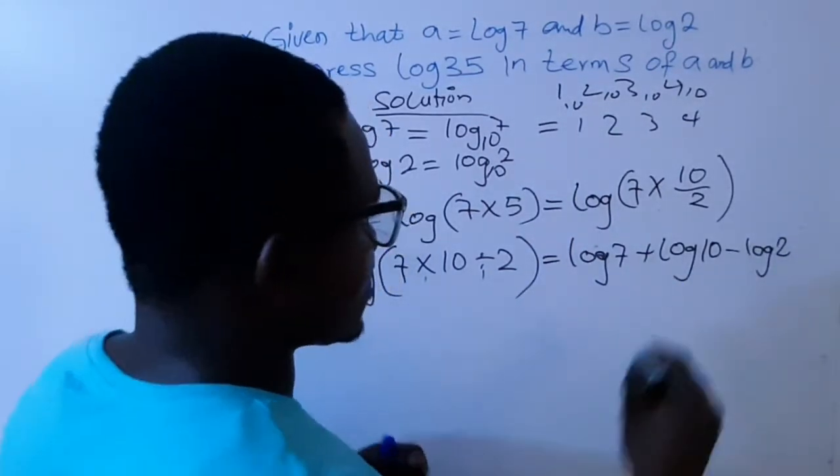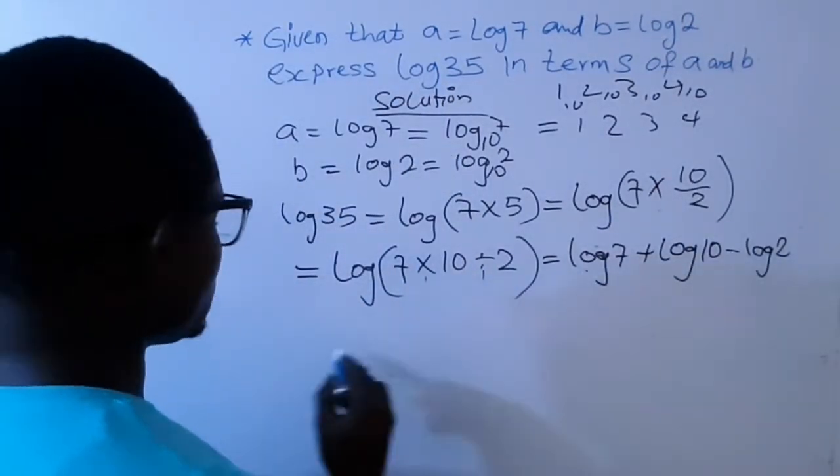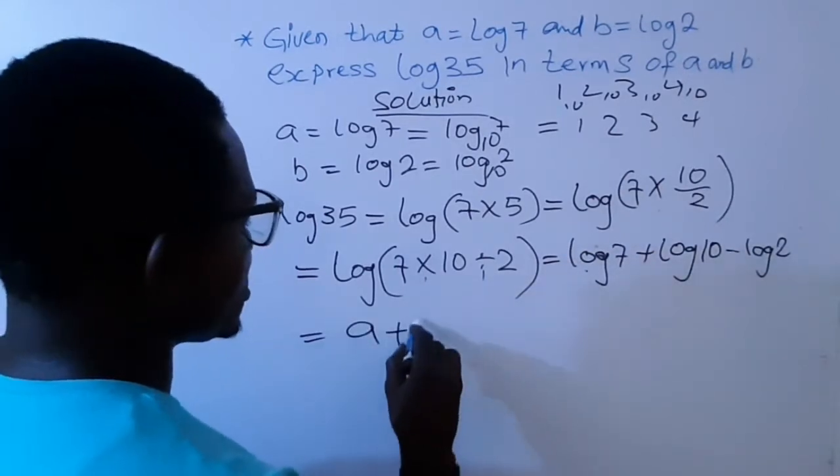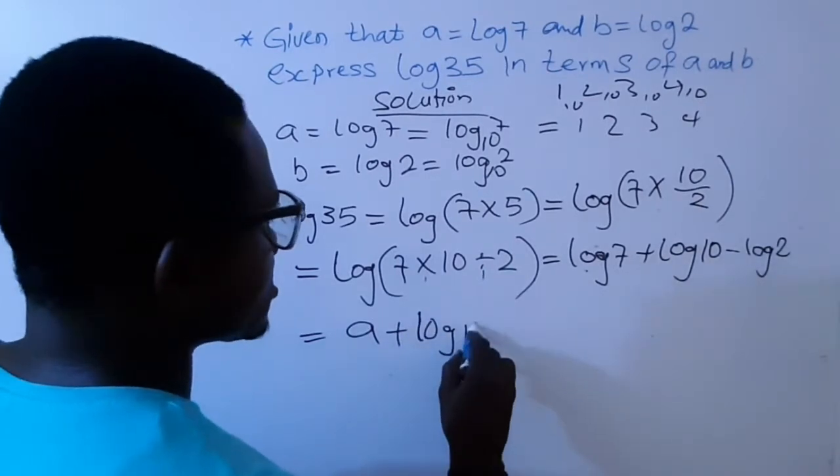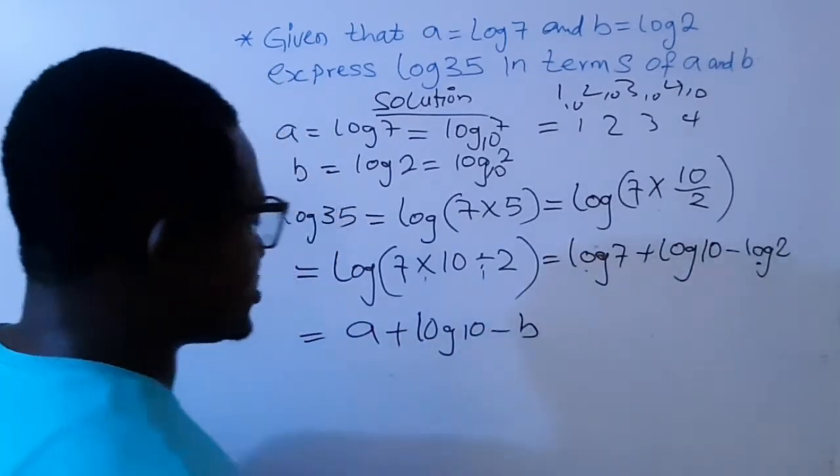Now I'm left with this. So I will tell you how to solve this. So I'm now changing this to A, then plus log 10, then minus, we are changing this one to B. Now, remain this.